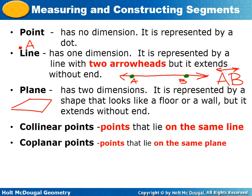When we talk about coplanar points, we're talking about points that are on the same plane. In this plane, if we draw three points and label them A, B, and C, then those three points A, B, and C are coplanar because they are on the same plane.